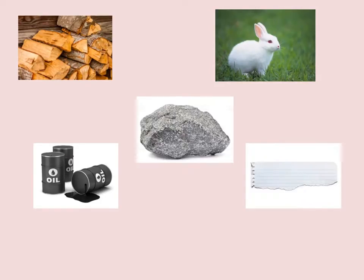Photosynthesis is the process of autotrophs or producers like grass and trees converting carbon dioxide and water into glucose sugar. Out of these five things on the screen, which ones are made through photosynthesis?